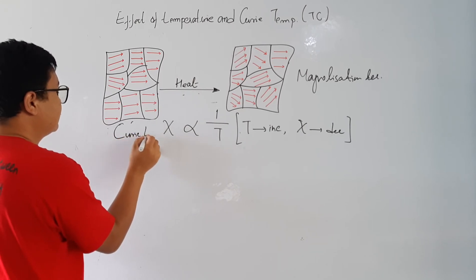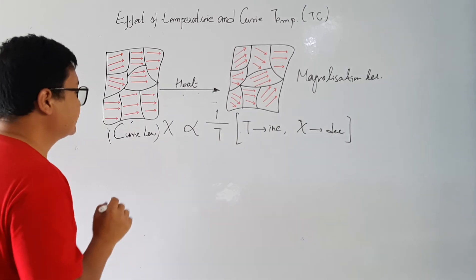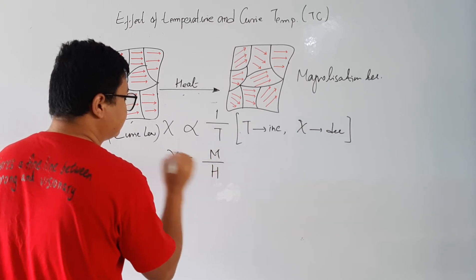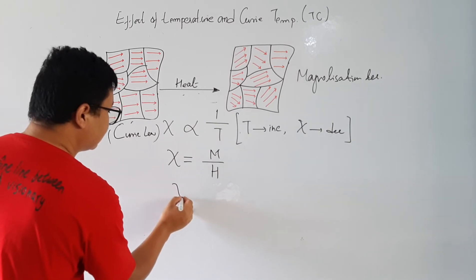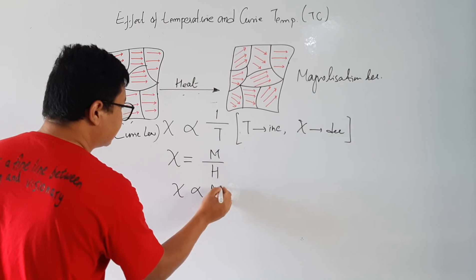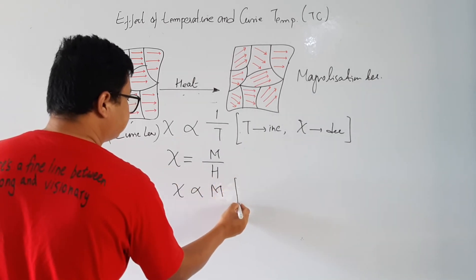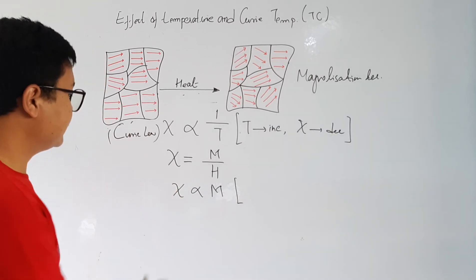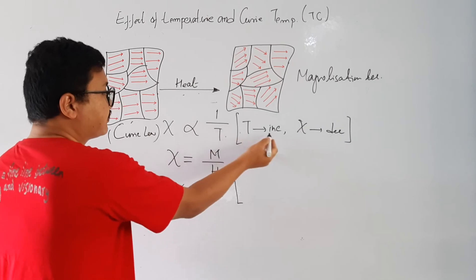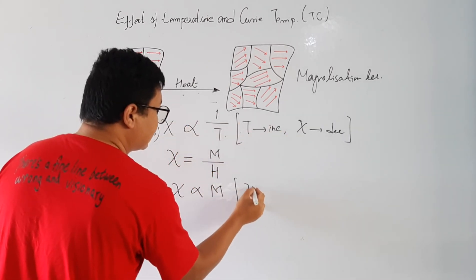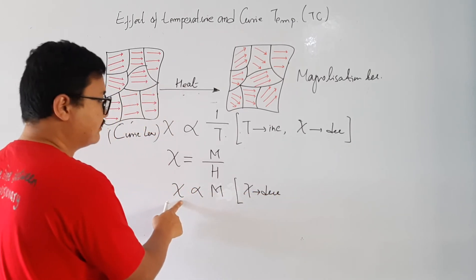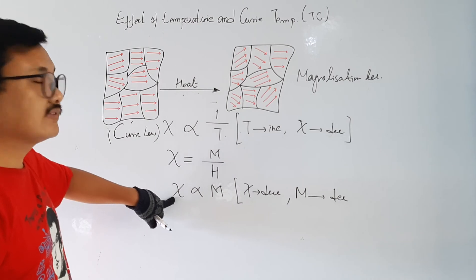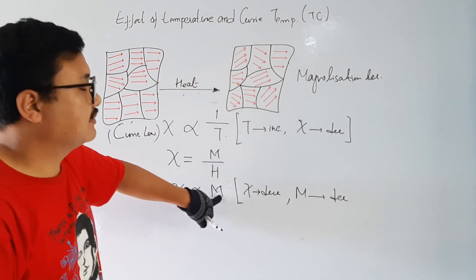This is the Curie law. We also know that susceptibility χ equals magnetization M divided by the magnetizing field H. If we keep the field constant, then χ is proportional to M. So if chi increases, magnetization increases; if chi decreases, magnetization also decreases.